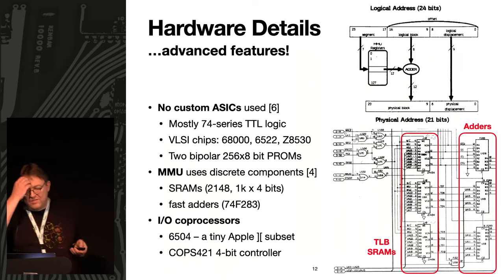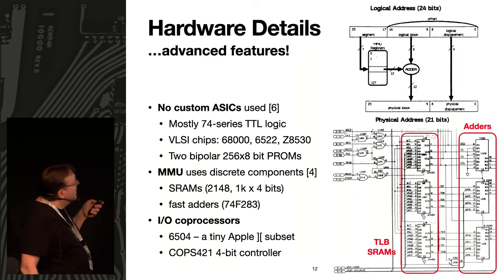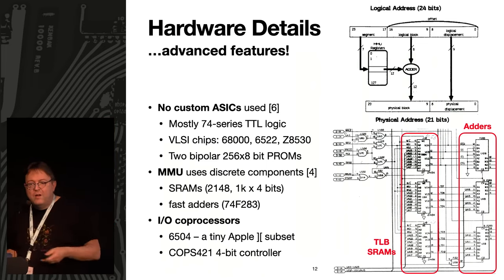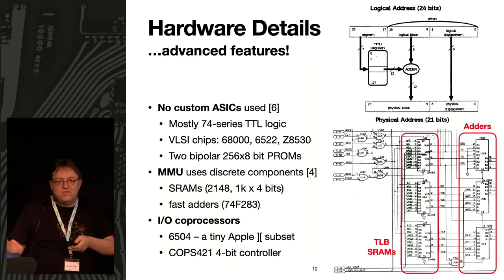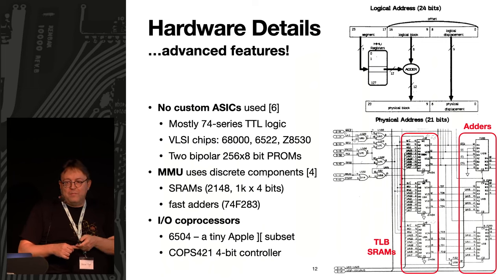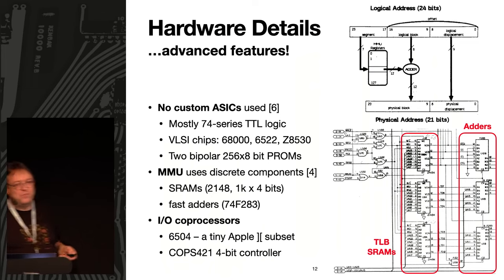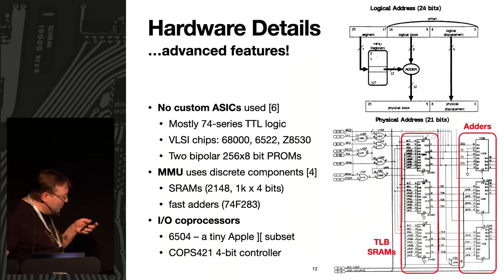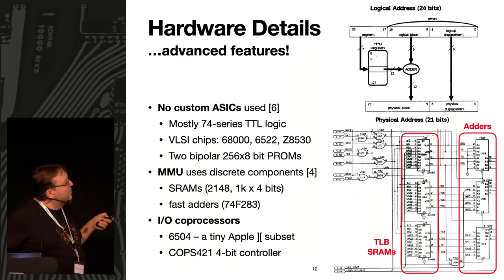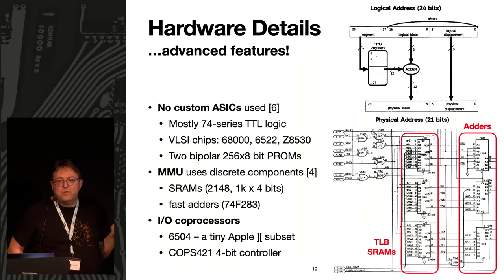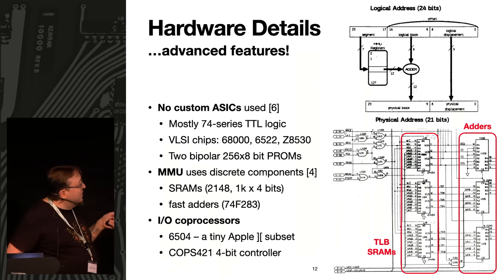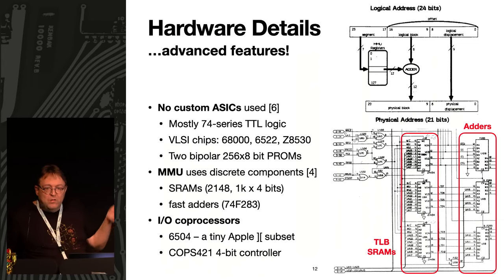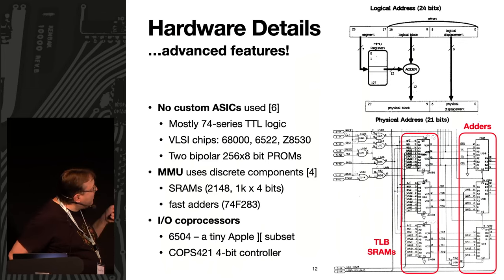Interestingly, there are almost no custom ASICs in the machine. Most of the logic is 74-series TTL — you can go to a local electronics shop and buy the parts over the counter. There are some large-scale integration chips: the 68000 CPU, parallel port chips (the 6522 VIA — which Commodore users will recognize from the 1541 floppy drive), the Zilog serial chip, two bipolar PROMs — one almost the same as used in the Apple II floppy controller, the other running the video state machine for generating video signals on time.